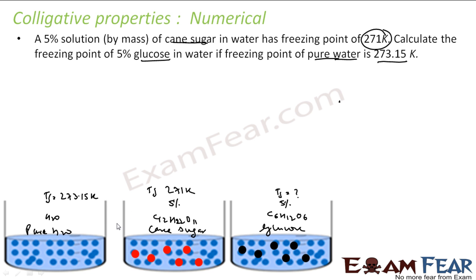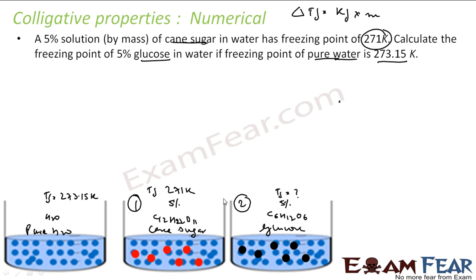In the first scenario, pure water with cane sugar added causes a dip in freezing point from 273 to 271. In the second case, pure water with glucose also has a dip in freezing point — that's what we need to find. The value of Kf is not given, so for both cases we use the equation ΔTf = Kf × M, where M is molality of cane sugar in case 1 and molality of glucose in case 2.